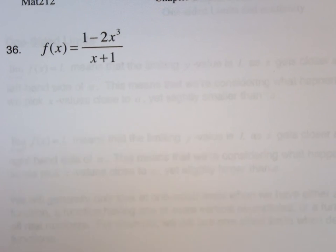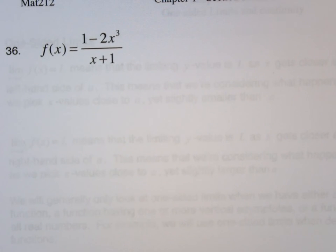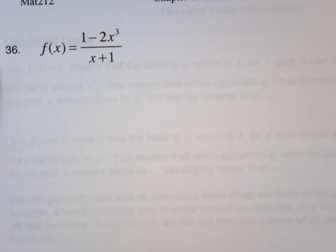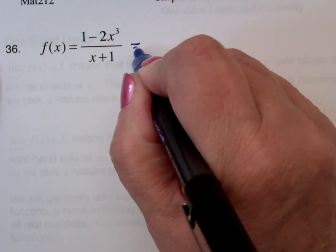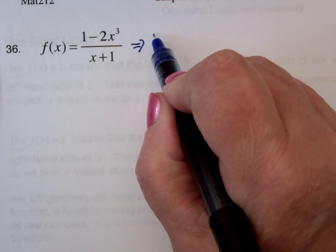We're still dealing with limits at infinity and they want us to take the limit as x goes to positive infinity and as x goes to negative infinity. And if we remember when we're dealing with a rational function, the easiest thing for us to do is to look at the model.